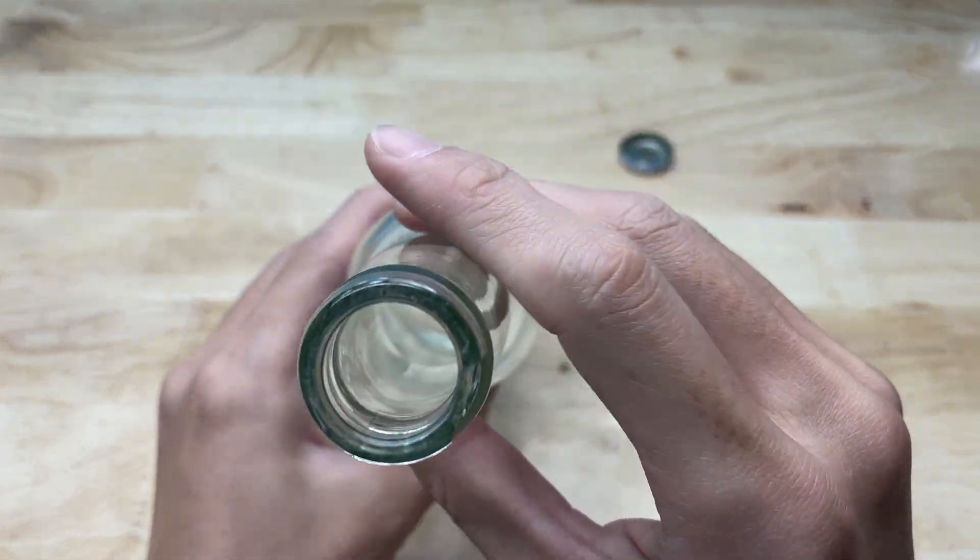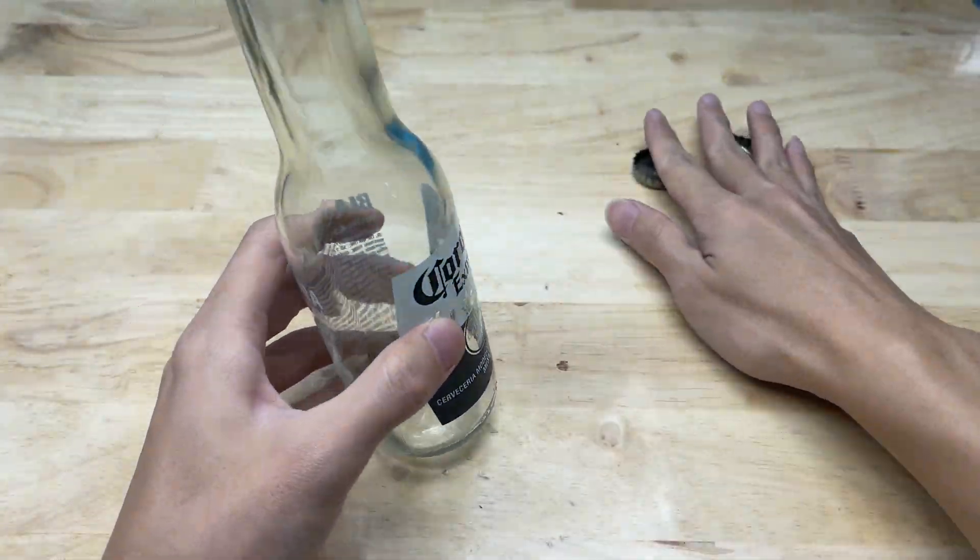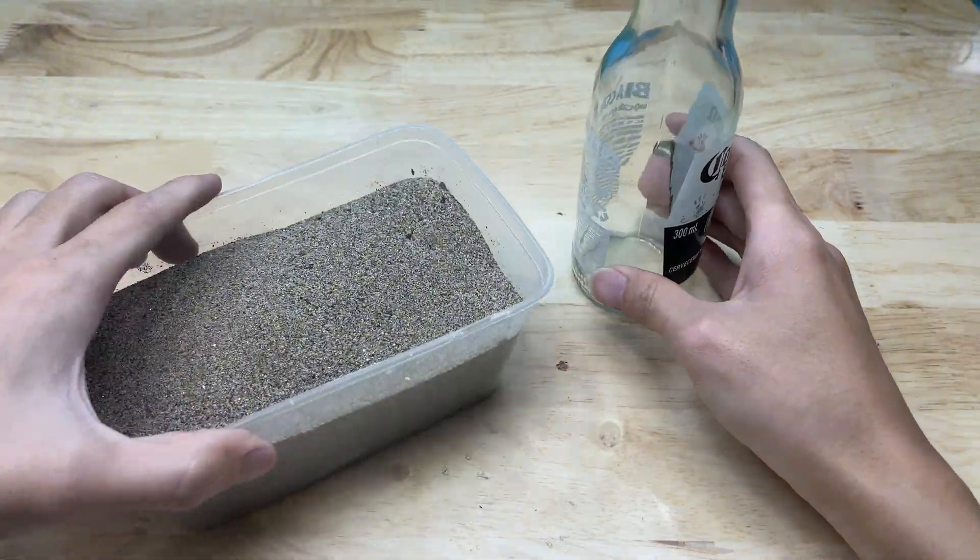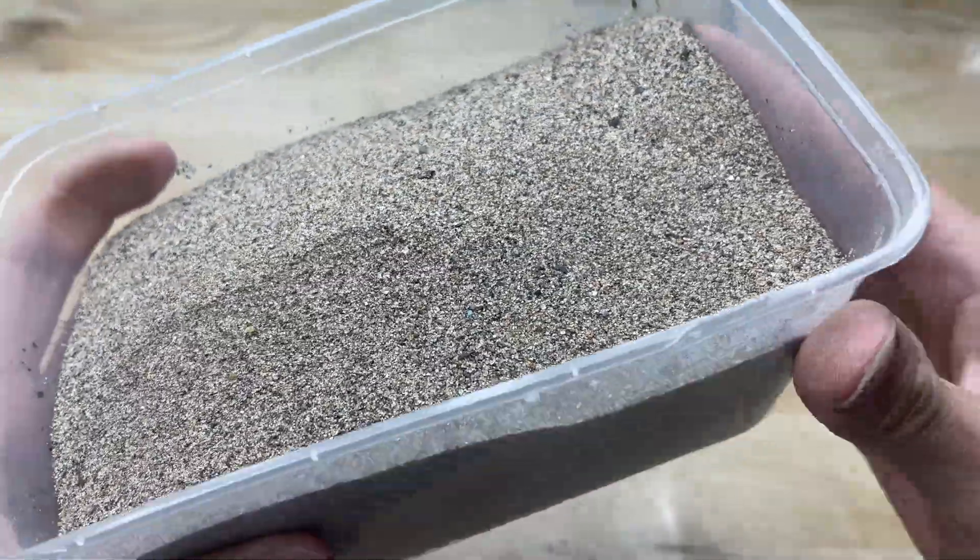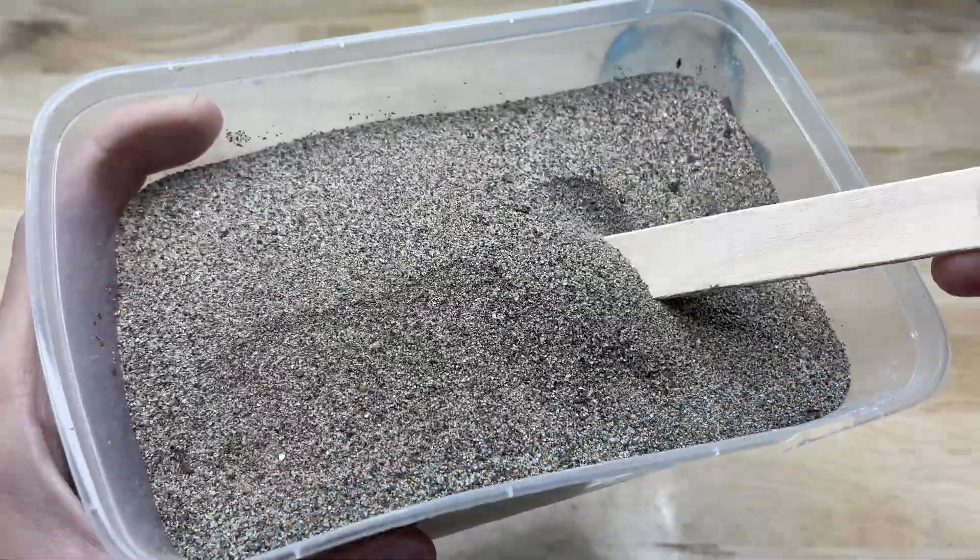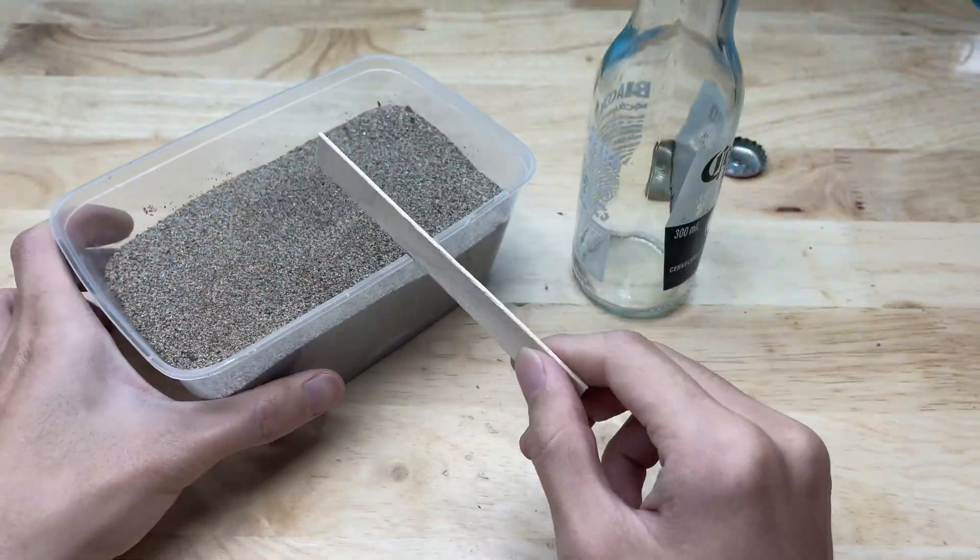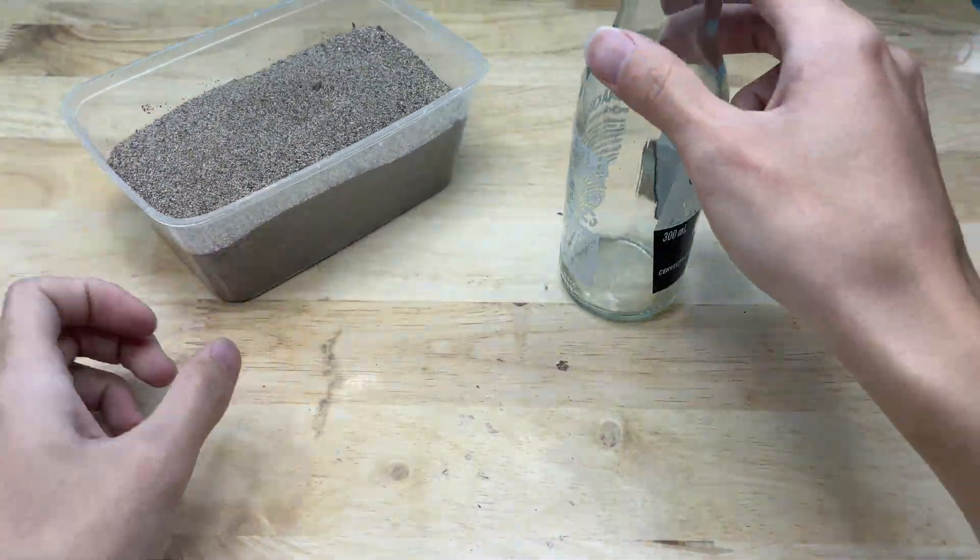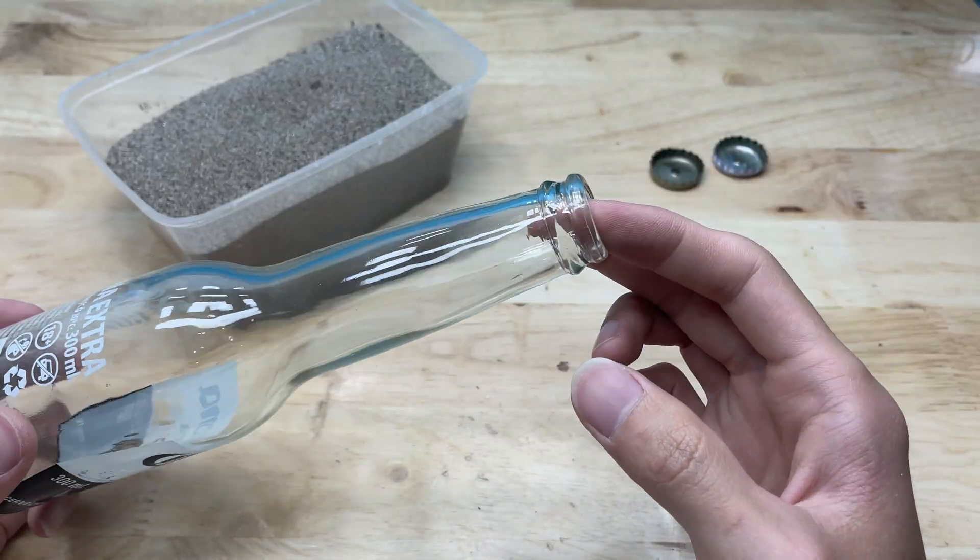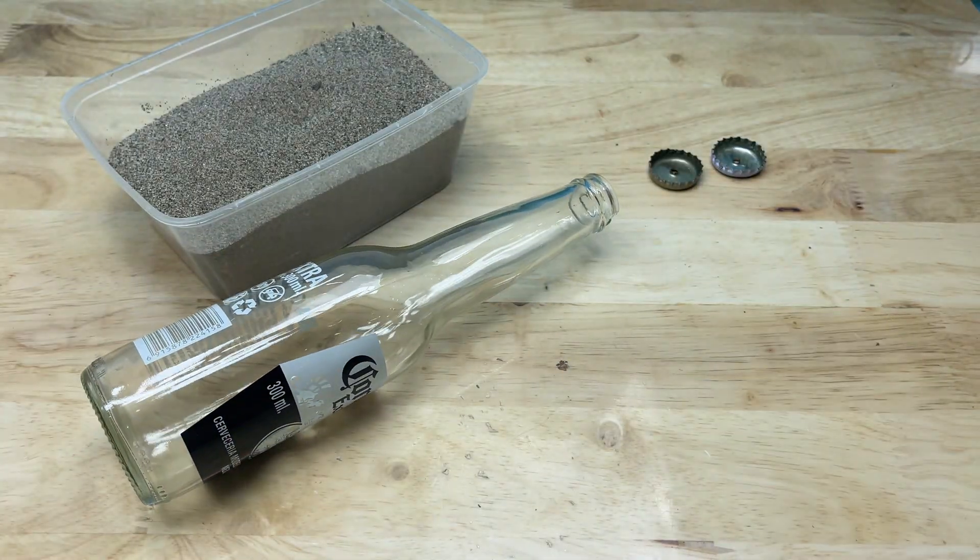Next, I will pour sand into the bottle until it is completely full. The sand should be added slowly, gently shaking the bottle during the process to help it compact and minimize any empty spaces inside. Once the bottle is fully filled, its weight increases noticeably, making it much more solid and stable, and ready for the next step of sealing the cap or securing it to other components.